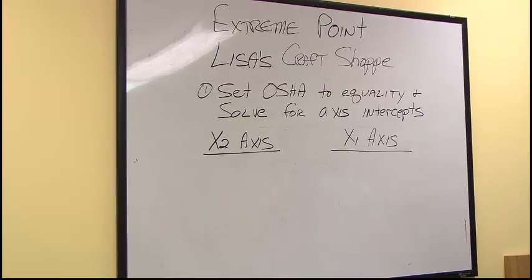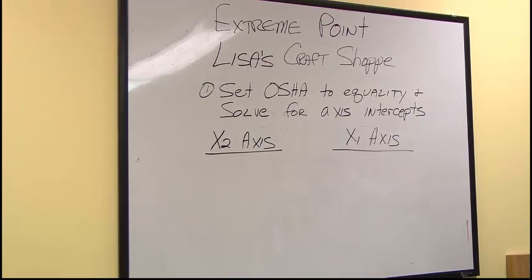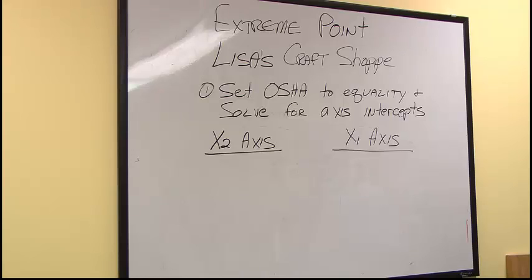The first two constraints have already been graphed, so now we need to graph the third OSHA requirement. Same as the other two, we find the x1 and x2 intercepts.